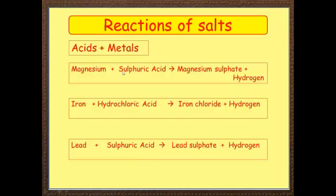Okay, I do trust you guys. The first one: magnesium plus sulfuric acid is magnesium sulfate plus hydrogen. Iron plus hydrochloric acid is iron chloride plus hydrogen. Lead plus sulfuric acid is lead sulfate plus hydrogen. So there we go, examples of acids and metals. How'd you get on? I think you would have got three out of three on that because it's so easy. Give yourself a little bit of a pat on the back.